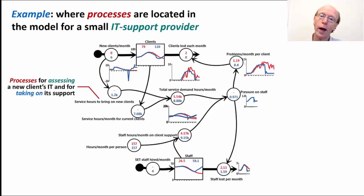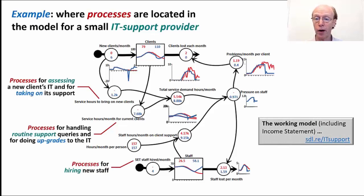So this is a working model of this enterprise and most of the data on the red time series is real data up to month 24. Where do processes feature in this? Well, on the left hand side, when the company wins a new client, it's got to go out and appraise their IT, appraise their systems and figure out how it's going to support them. So there are processes that their people go through for assessing a new client's IT needs and taking on the support that they're going to require.